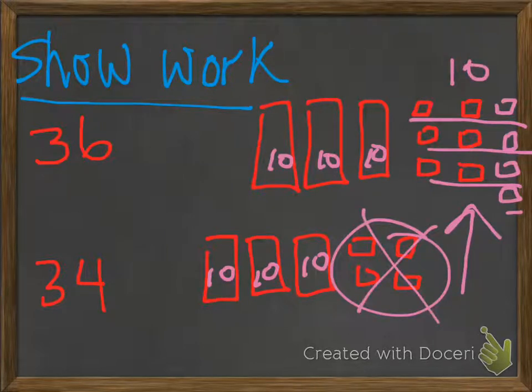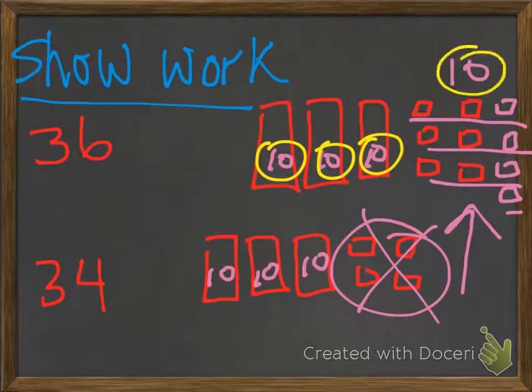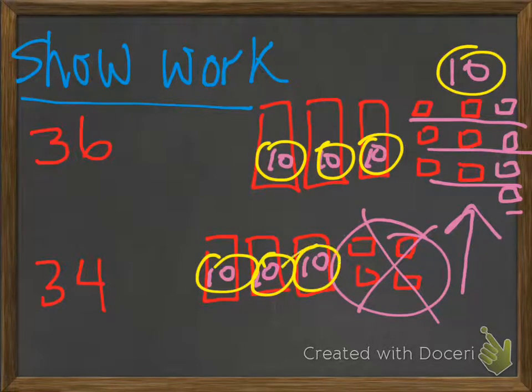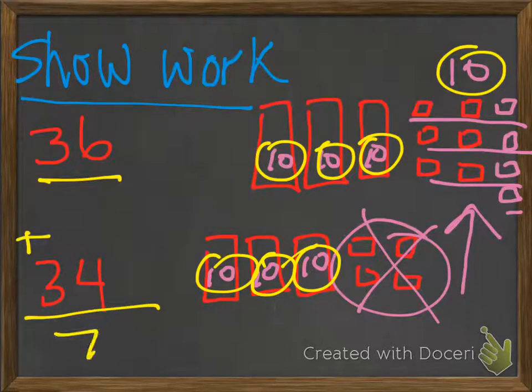So we cross these out. And now we can go ahead and solve. We have 10, 20, 30, 40, 50, 60, 70. And that's how when you break it apart and you shift it around, it makes it much easier to add. So 36 plus 34 equals 70.